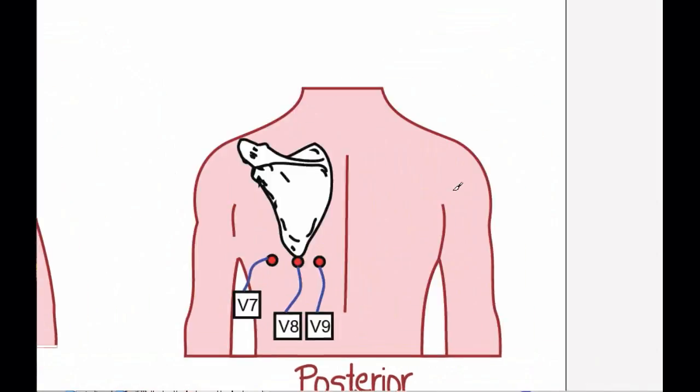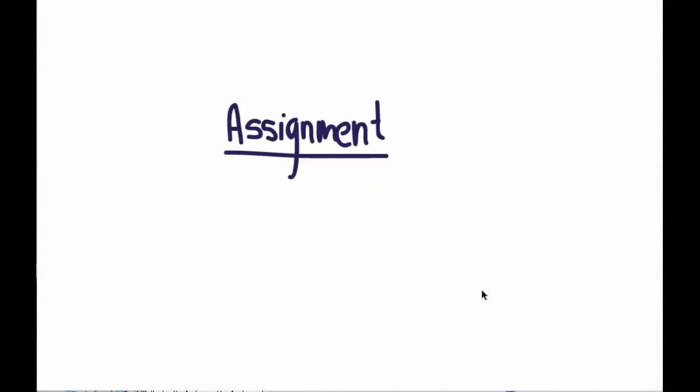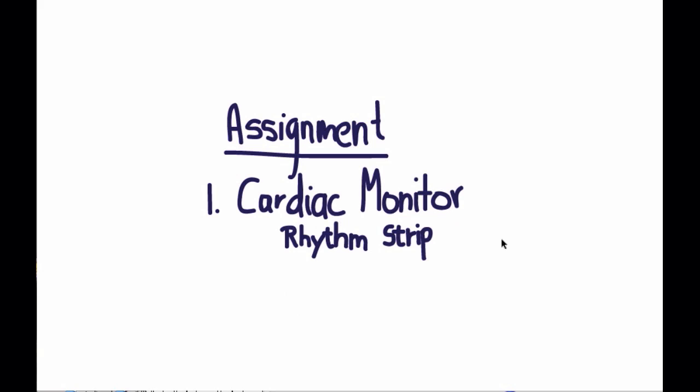And that's it. That's the end of Module 1. Your assignment for this module is to place a patient of yours on the cardiac monitor. Print a rhythm strip. Flip it over, write your name on it, and put one of the patient's stickers on the back. Then have someone, either the nurse, the doctor, or the tech, sign it. And then turn that in to me.